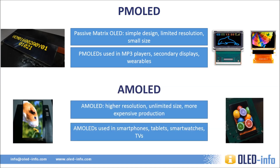Active Matrix OLEDs, or AMOLEDs, use an active driving architecture that enables unlimited resolution and size. AMOLEDs offer higher quality displays and are also more efficient than PMOLED displays, but this comes at a price — mainly a complicated production process and a higher cost. AMOLEDs are currently mostly used in smartphones, tablets, smartwatches, and TVs. To sum it up, if you're looking for a high-end display for a mobile phone, tablet, or smartwatch, you'll probably want an AMOLED. For cheaper, smaller, and more simple applications, a PMOLED may suffice.